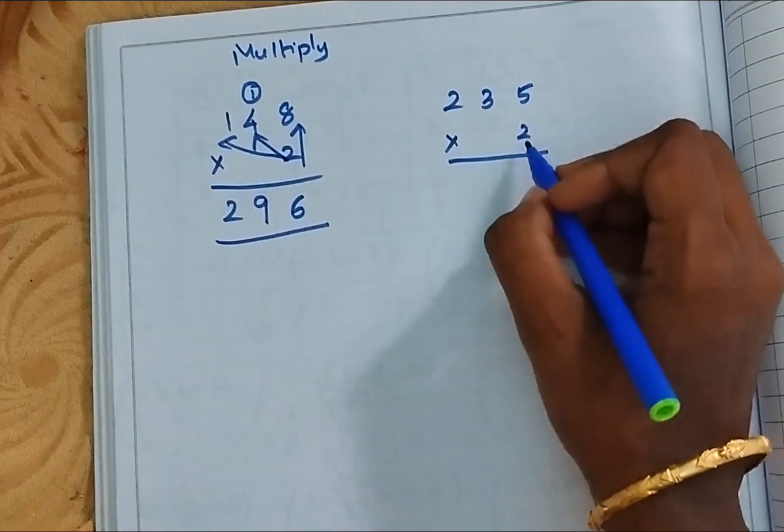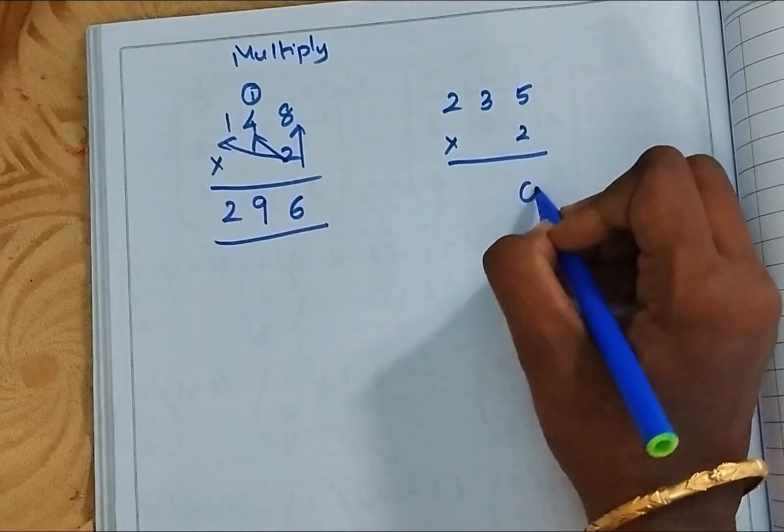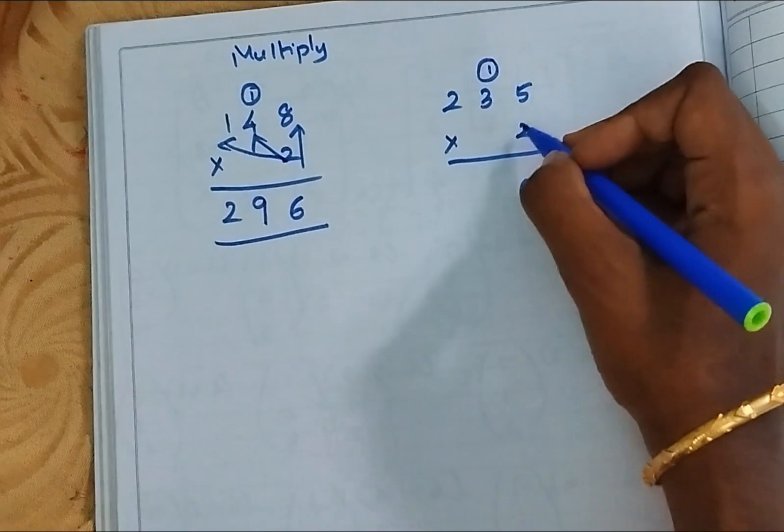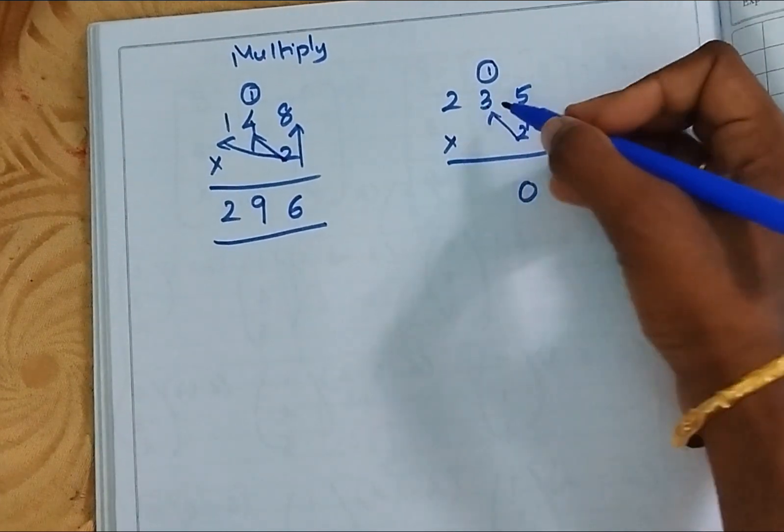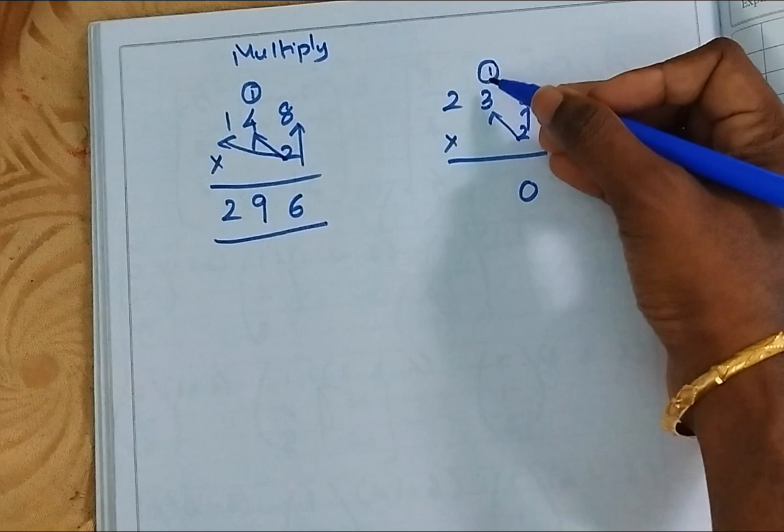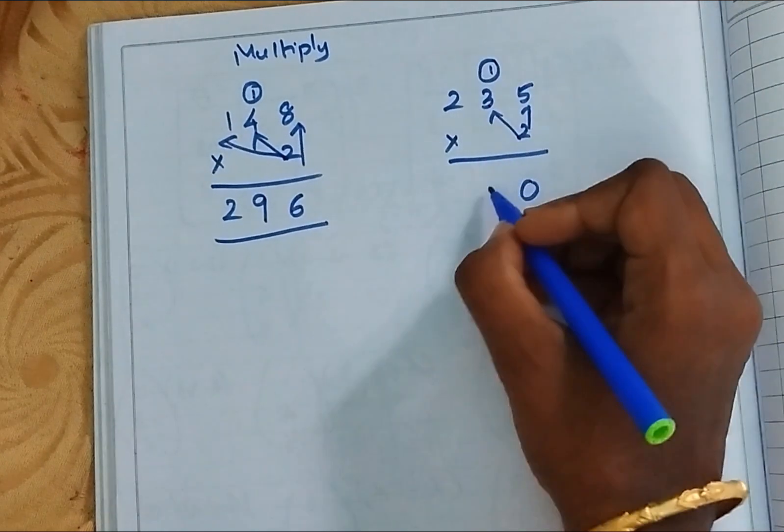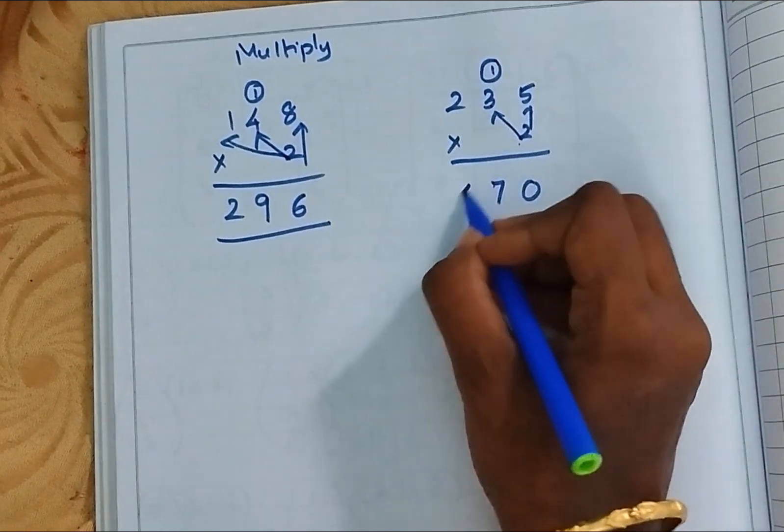Only the place is increased. 2 times 5 is 10, so 0, carry 1. 2 times 3 is 6. Whatever you are multiplying, if there is some number, you should add it up. 6 plus 1 is 7. 2 times 2 is 4.